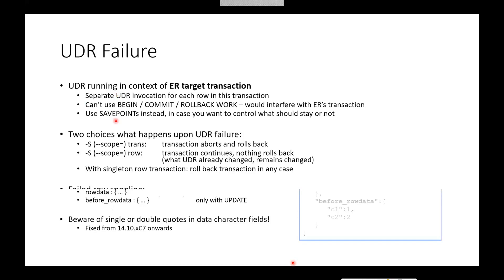The transaction ID is simply the combination of lock unique ID and lock position — something enterprise replication works heavily with. The UDR is running in the context of an enterprise replication target transaction, so you would have multiple invocations if the transaction comprises multiple rows. You cannot use begin, commit, or rollback there because that would confuse enterprise replication. If you need some control about what happens in the event of a failure, use savepoints instead.